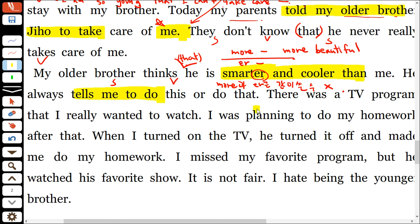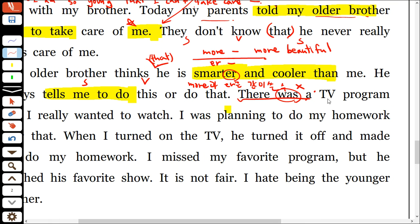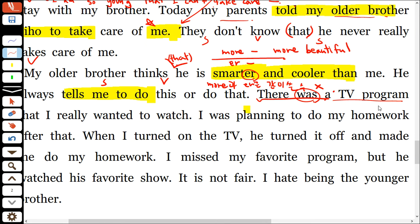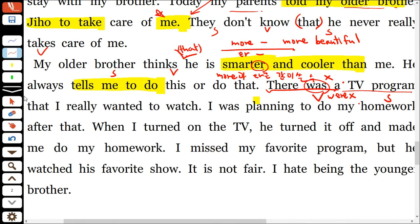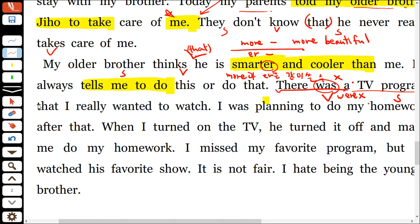tell + 목적어 + to부정사 하이라이트, 그리고 'there is / there are'는 '~이 있다'는 뜻이에요. 스위치는 뒤쪽에 시켜요. 뒷부분이 단수로 나왔기 때문에 program이 주어, is가 동사예요. are를 쓰면 안 돼요. 이어서 나오는 that은 목적격 관계대명사예요. 목적격 관계대명사는 생략 가능해요. 뒷부분을 봤을 때 목적어가 빠져있으면 목적격, 주어가 없으면 주격이에요.